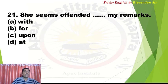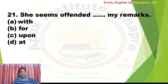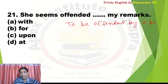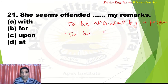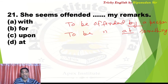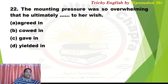Question 21: 'She seems offended dash my remarks.' Note: 'offended by a person' — we use 'by' when it's a person. 'Offended at something' — we use 'at' when referring to a thing. Here, it's not about a person but about remarks — a comment or tippani. So the answer is 'at'. Answer for Q21 is D.